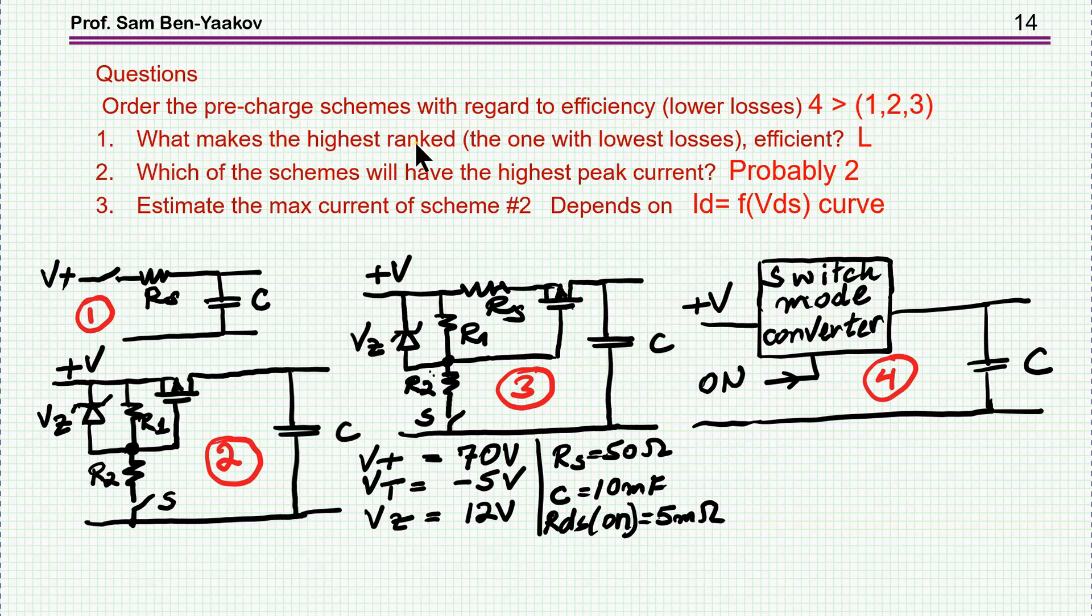Then, what makes the highest rank, the one with the lowest loss efficient? Well, we understand it's the inductor, which lowers the RMS current, while you can independently lower the resistance.